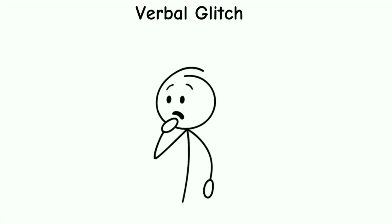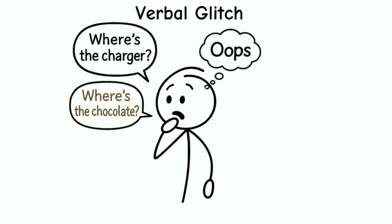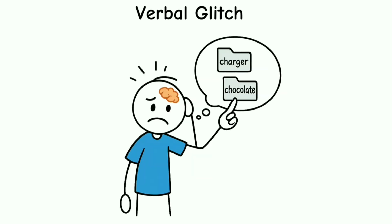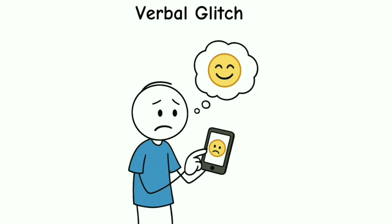Verbal glitch: you meant to say where's the charger, but it came out as where's the chocolate. Oops. Freud thought these slips revealed hidden thoughts. Today's science says it's just your brain pulling the wrong file, like clicking one emoji and sending another. It is known as a Freudian slip.